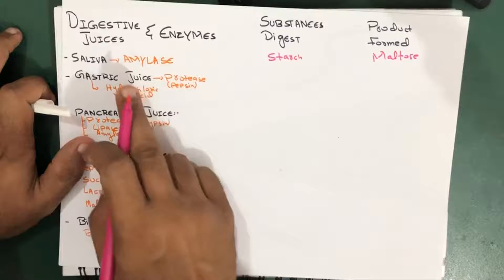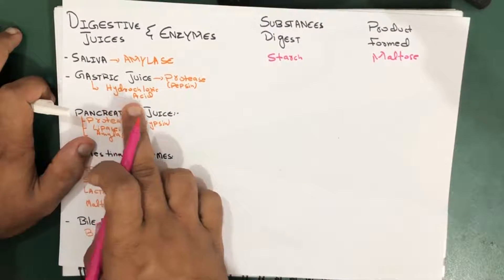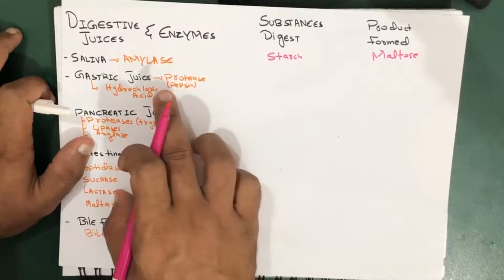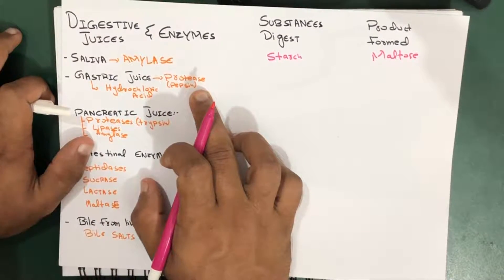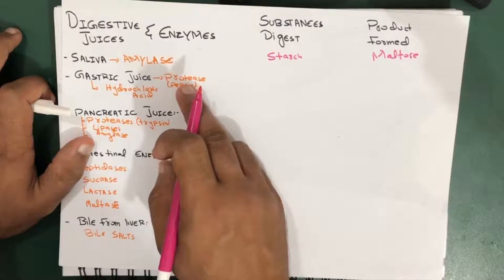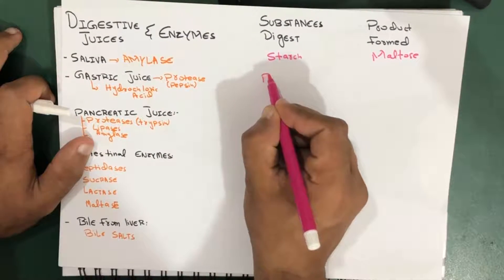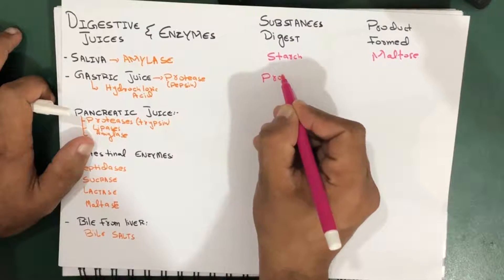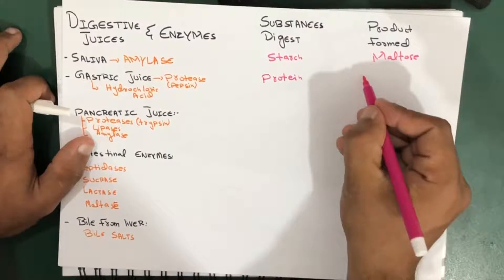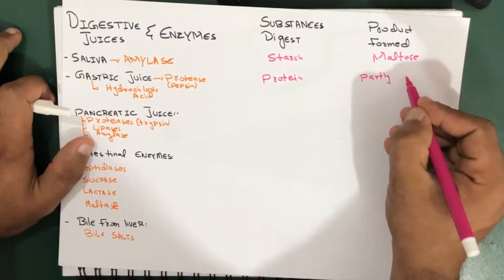Moving to gastric juices: we have hydrochloric acid, which is not an enzyme but an acid, and we have an enzyme called protease — the active form is pepsin. It digests proteins and converts them into partly digested protein.